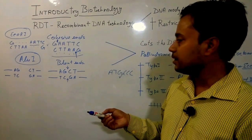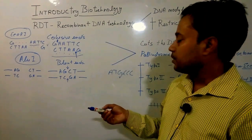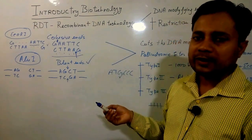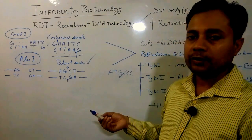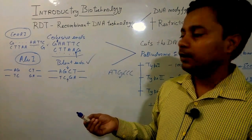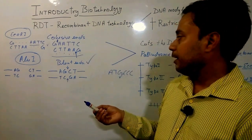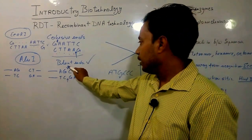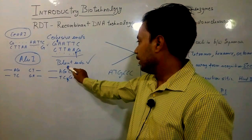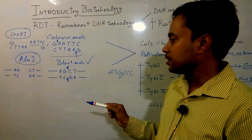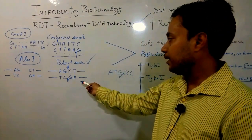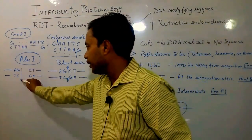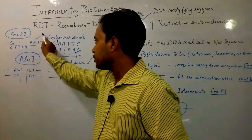The second class of restriction endonucleases produces blunt ends after digestion. Examples include SMA1, BVU2, ALU1, and DRA1. These enzymes cut both strands at exactly the same position within the recognition site, resulting in molecules with blunt ends rather than cohesive overhangs.